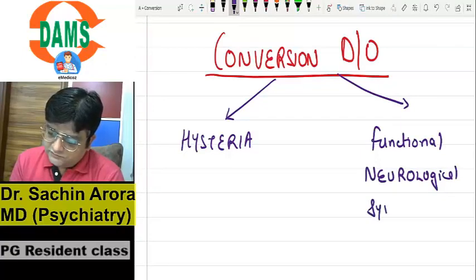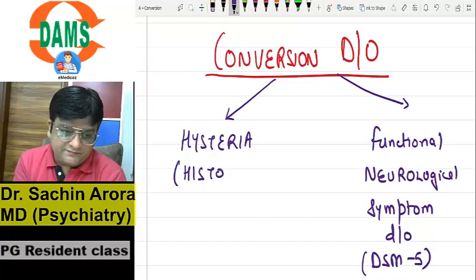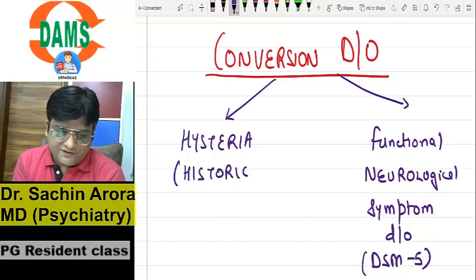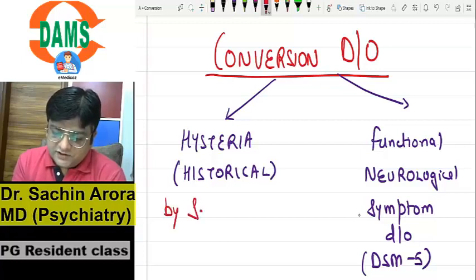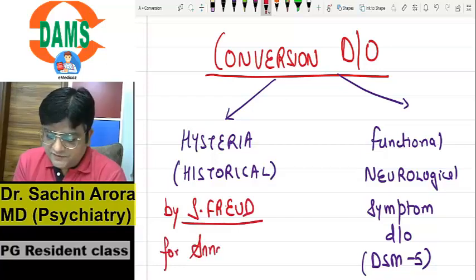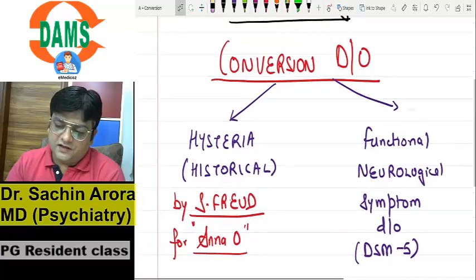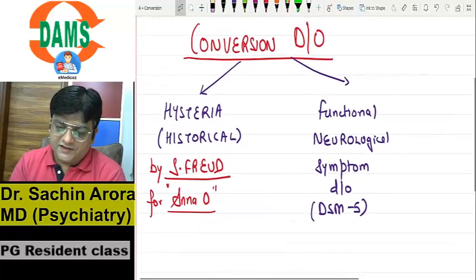Neurological Symptom Disorder — this is DSM-5 terminology. Hysteria is the historical name. This term was given by Sigmund Freud. You all know that the first patient of Sigmund Freud, the famous Anna O, was the lady who presented with neurological impairment but no organic cause could be found.